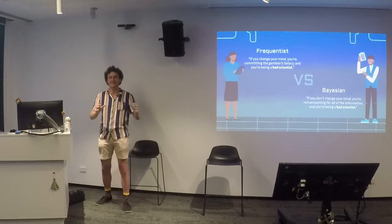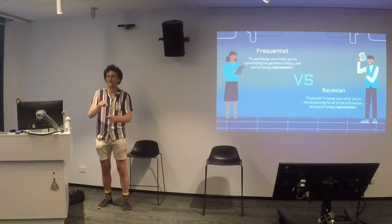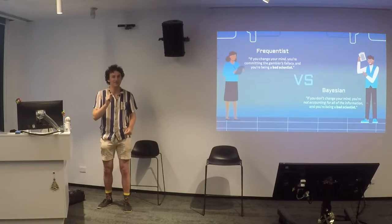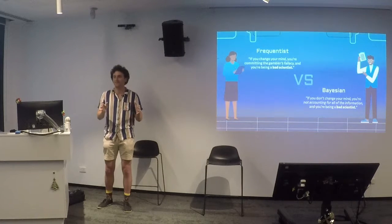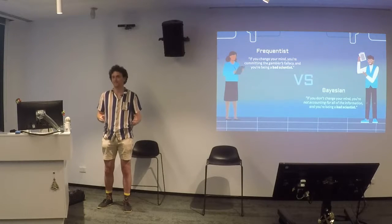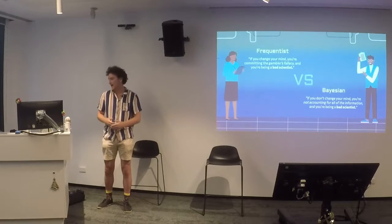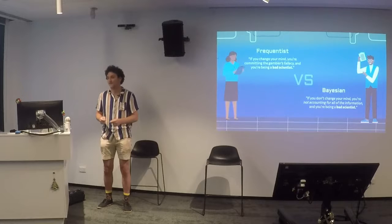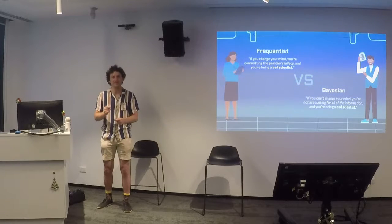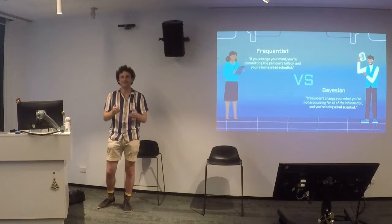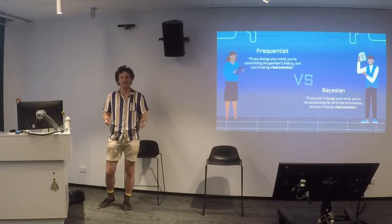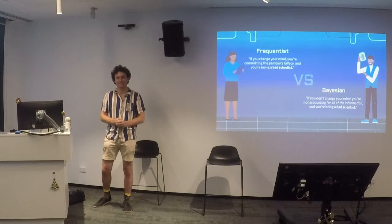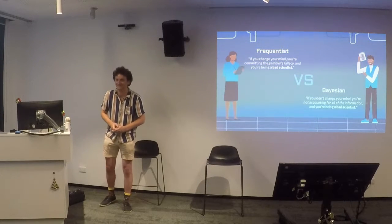Frequentists and Bayesians. Frequentists will look at this experiment and say that if you're changing your mind — if you're saying anything other than it's going to be the same probability each time — you're committing something called the gambler's fallacy, and you're being a bad scientist. On the other hand, if you talk to a Bayesian, they will say that as soon as that first tails lands, if you don't change your mind, you are not taking into account all of the observational evidence available to you. You're ignoring things, you're misleading yourself, and you're being a bad scientist.